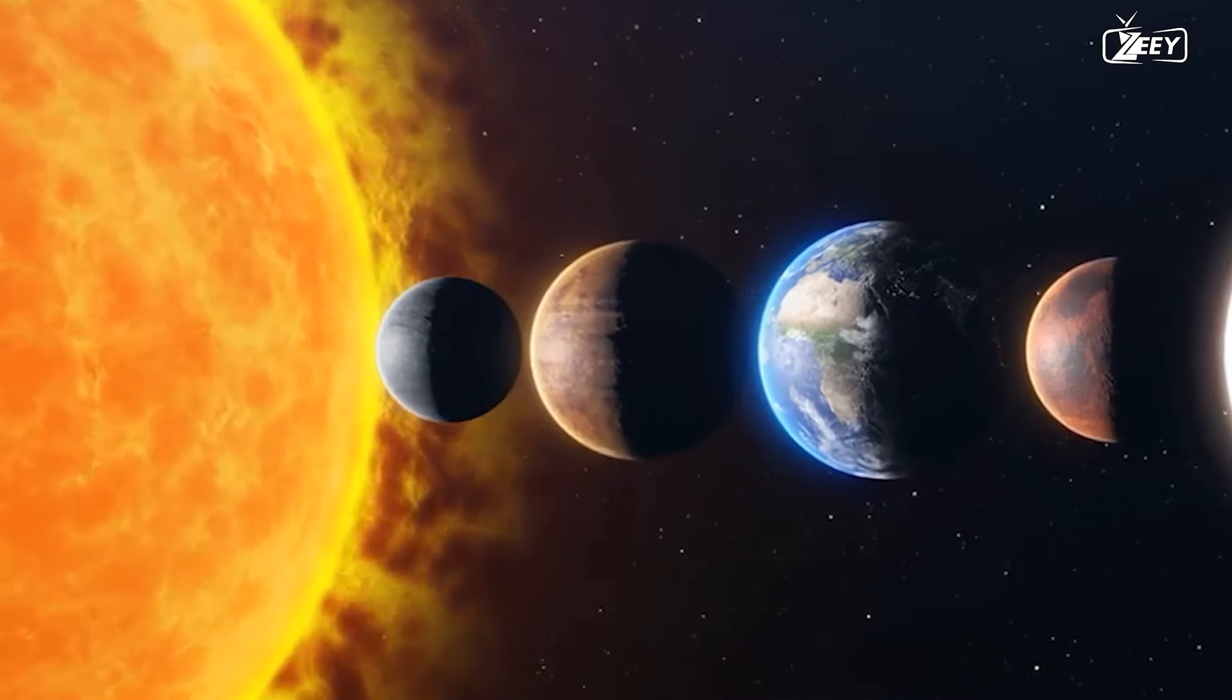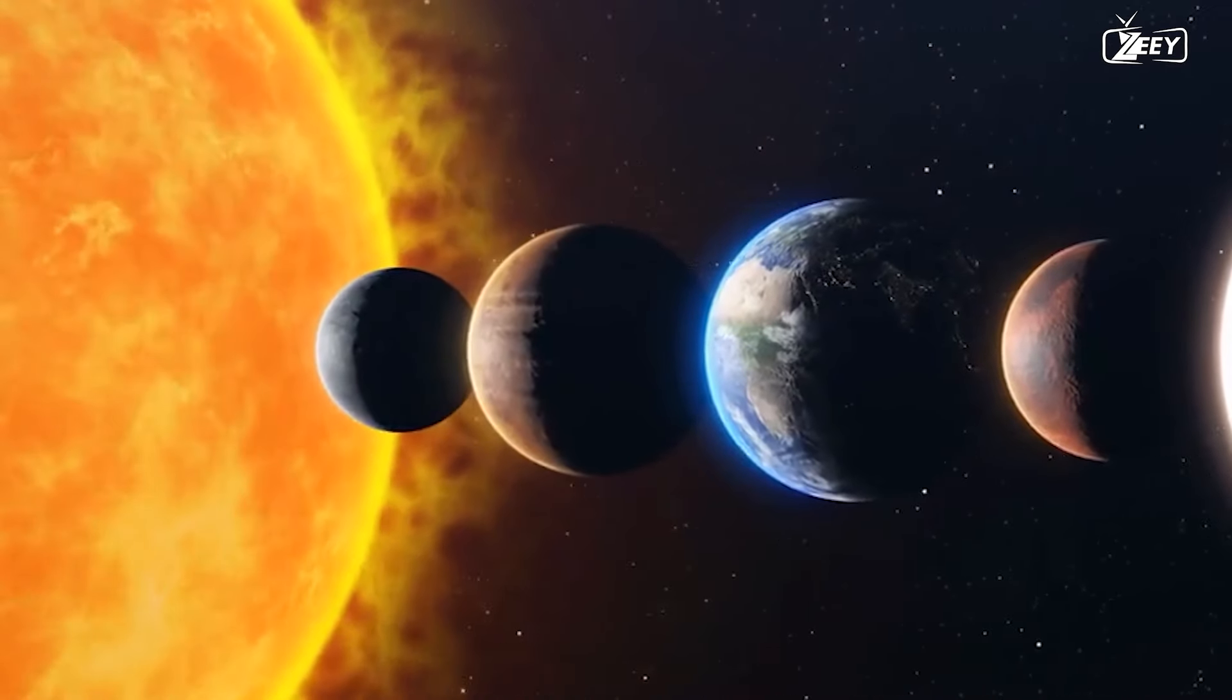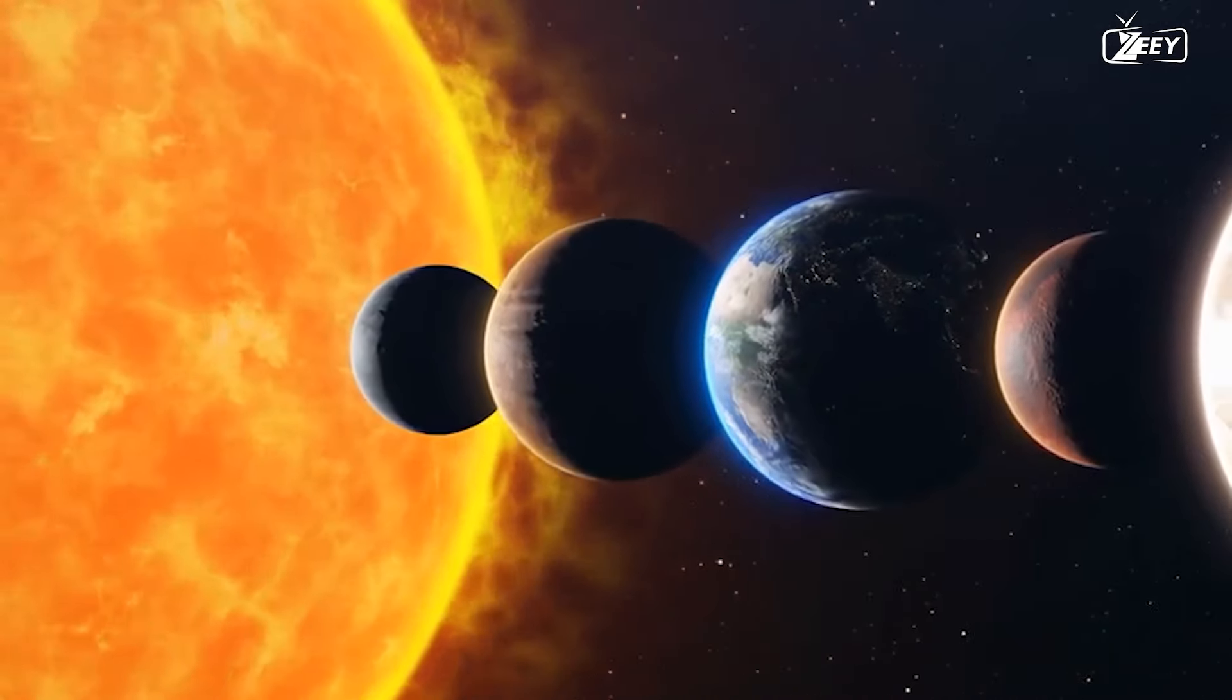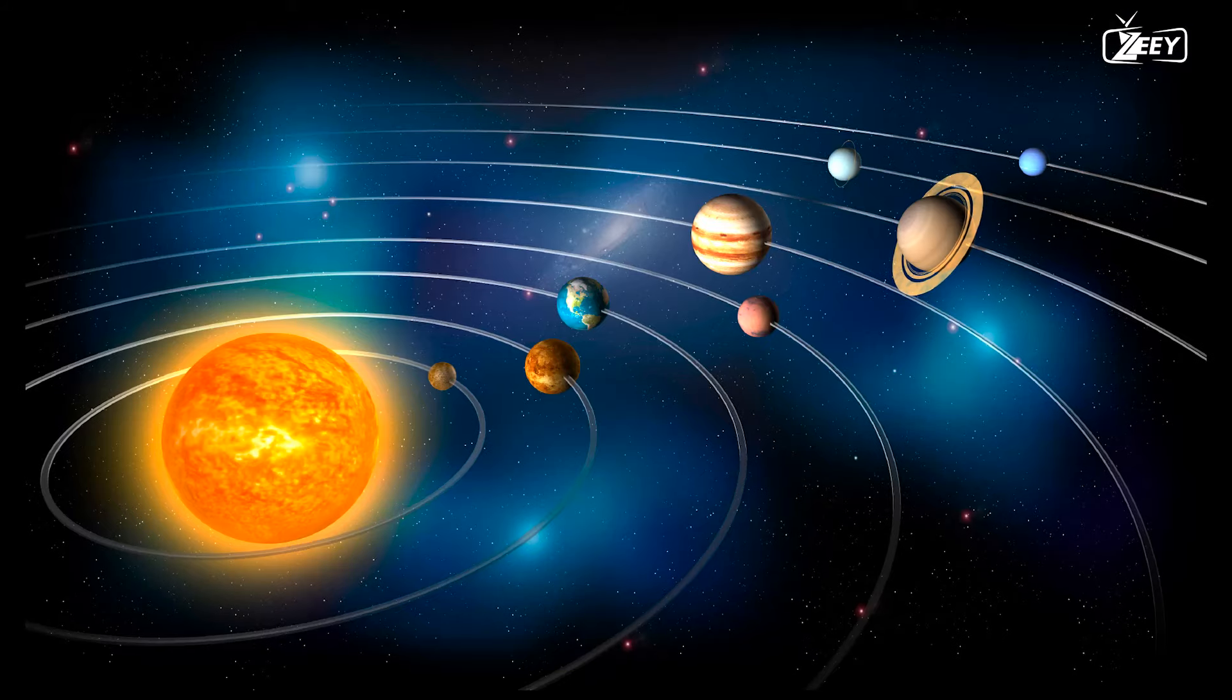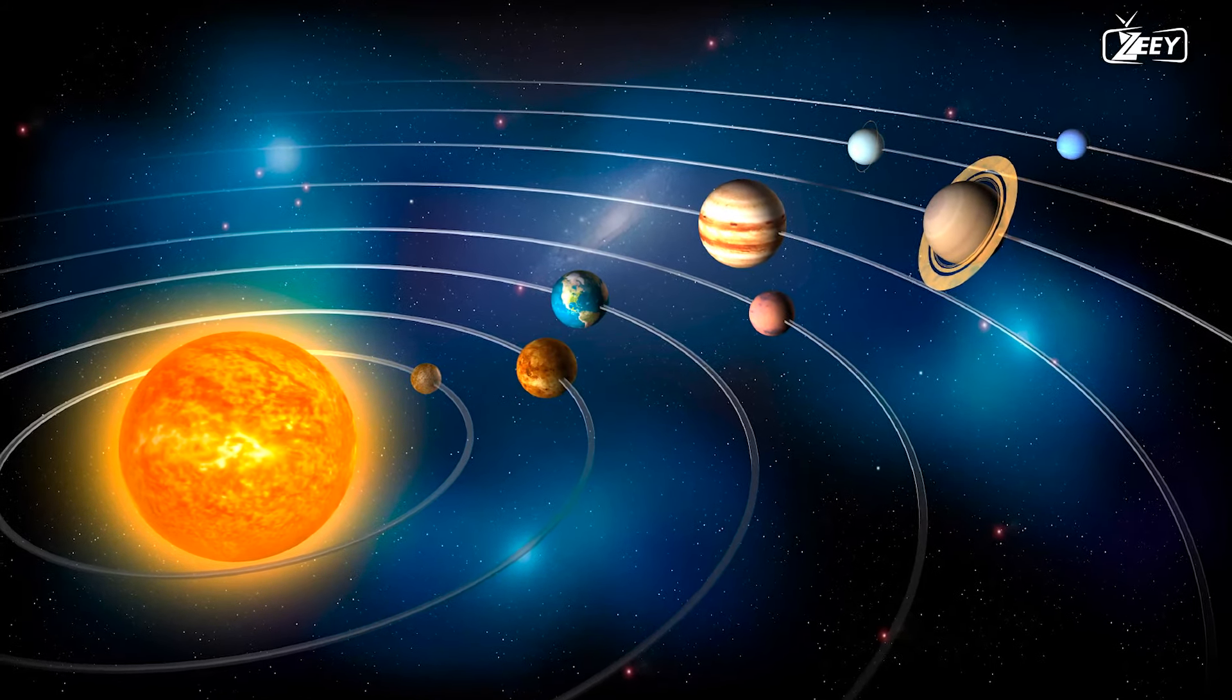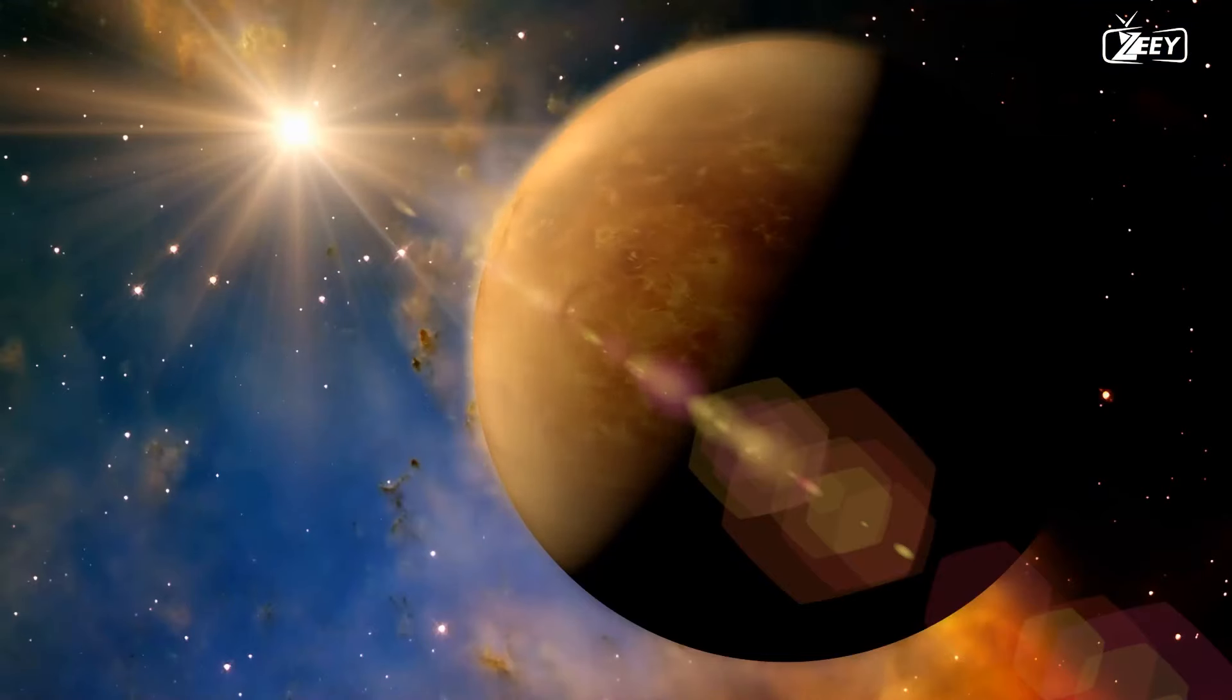The proximity of Venus to the sun is one of the key reasons it is so hot and unfriendly. Venus is the second planet from the sun and is closer to it than Earth is. As a result, Venus receives significantly more solar energy than Earth. This strong radiation raises the temperature of the globe, culminating in a runaway greenhouse effect.